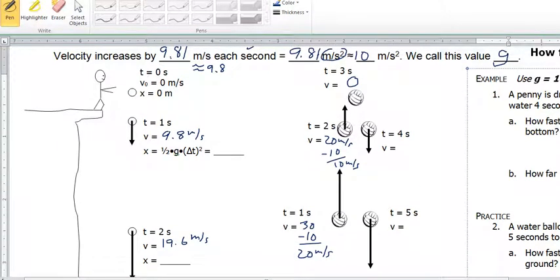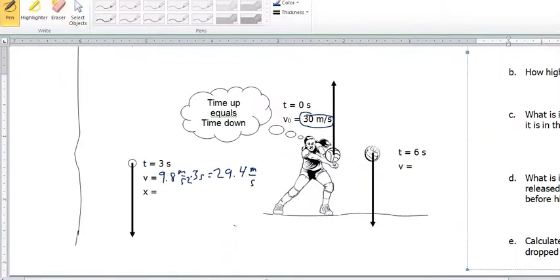So notice how this is the opposite, that when the ball was being dropped off the cliff, with each second it gained about 10 meters per second of velocity, from 10 to 20 and from 20 to 30.